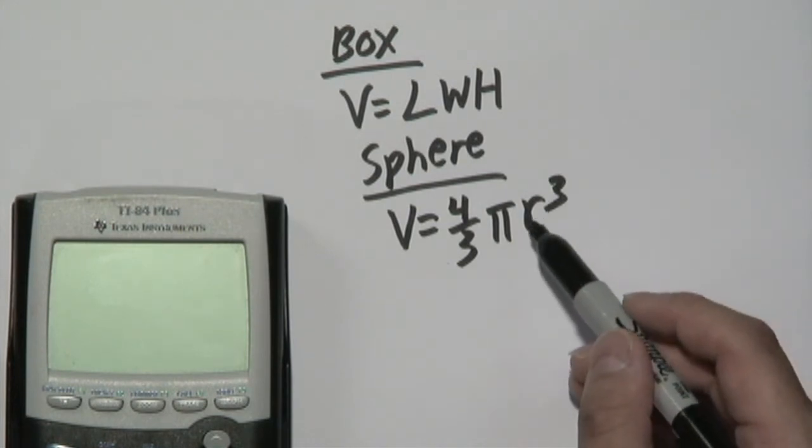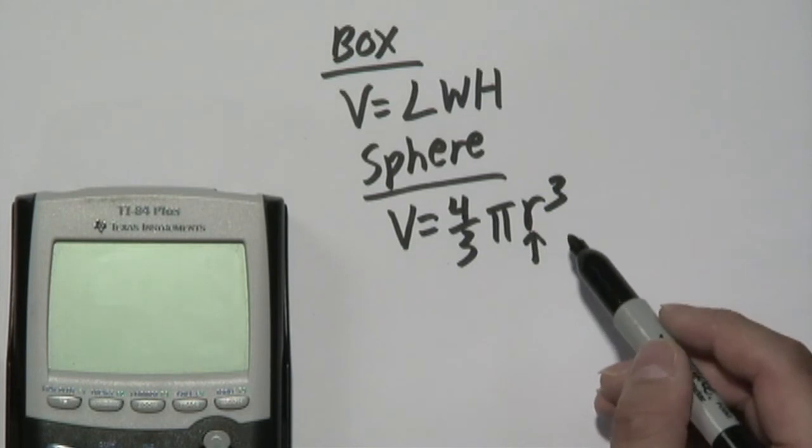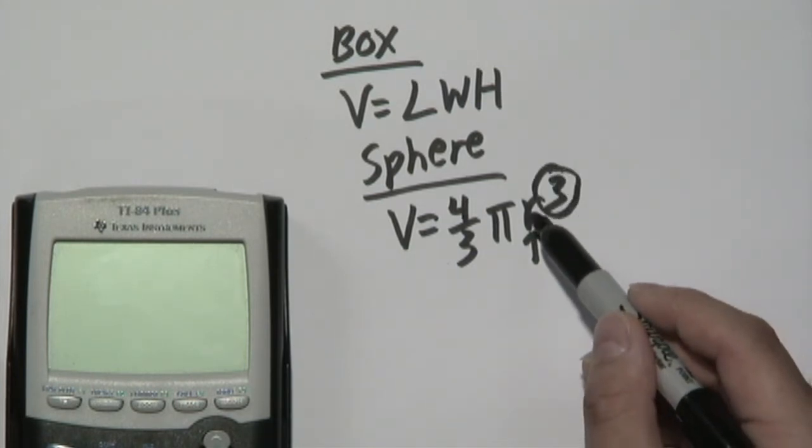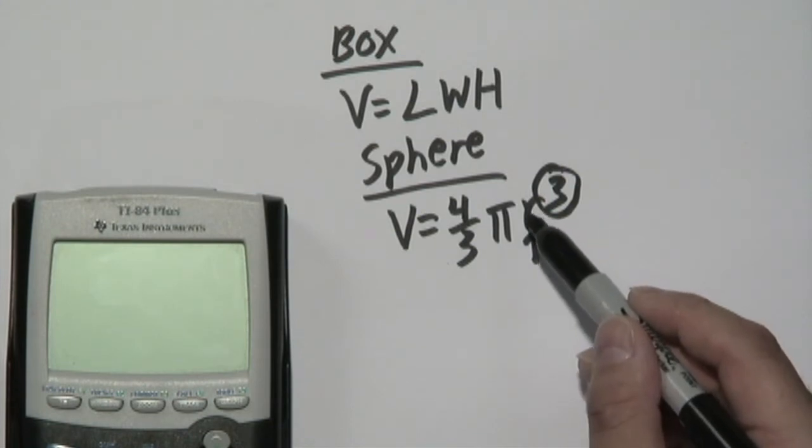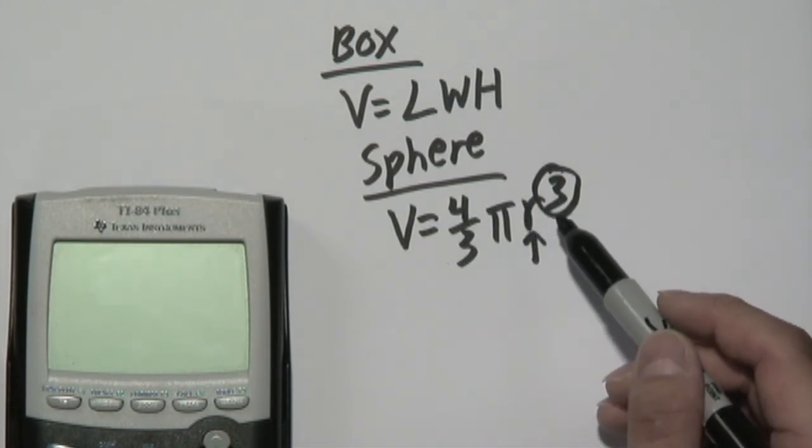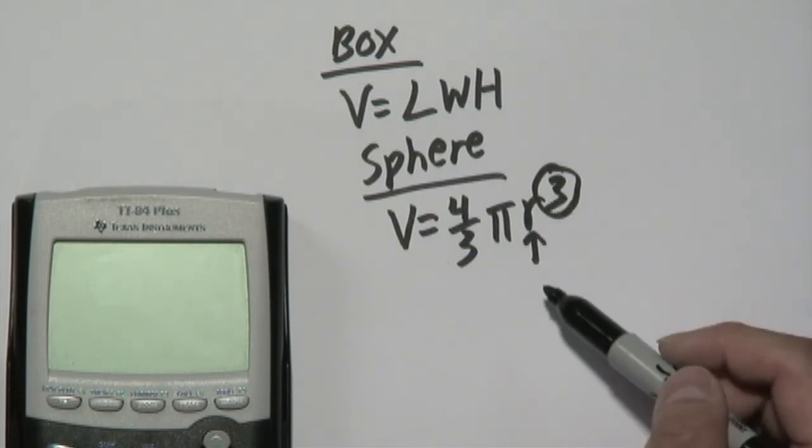The only dimension here is actually radius, but take a look at the power that's raised to three. That means the radius is measured three different times, therefore three dimensions. The dimensions don't have to be distinct necessarily, so in this case you have a three-dimensional measurement.